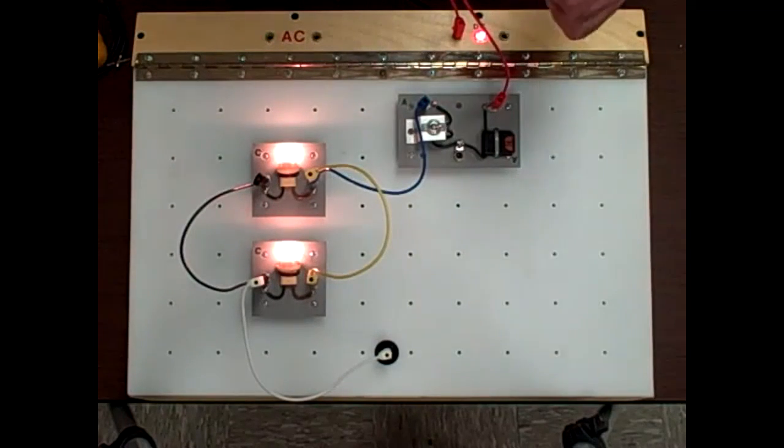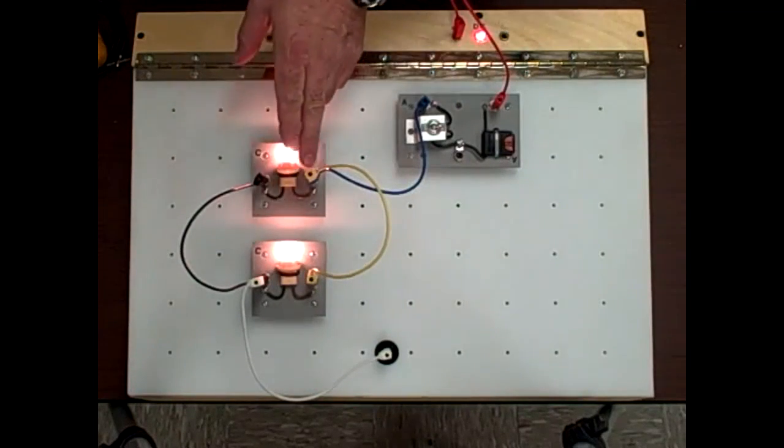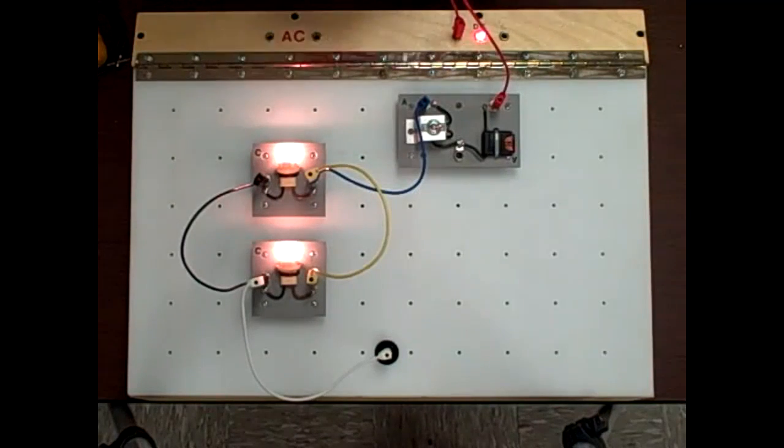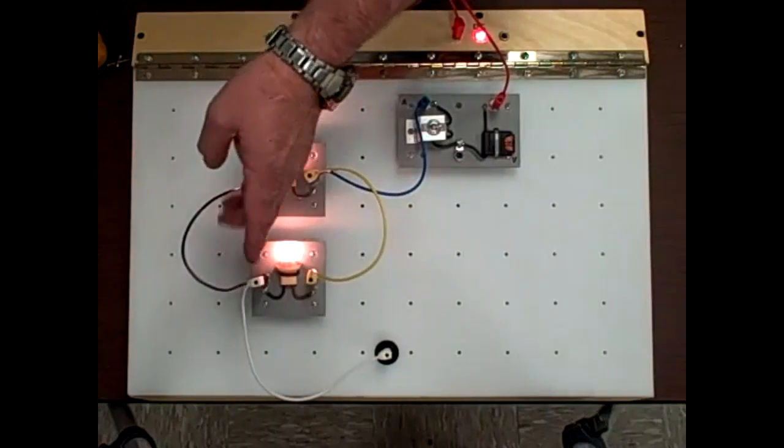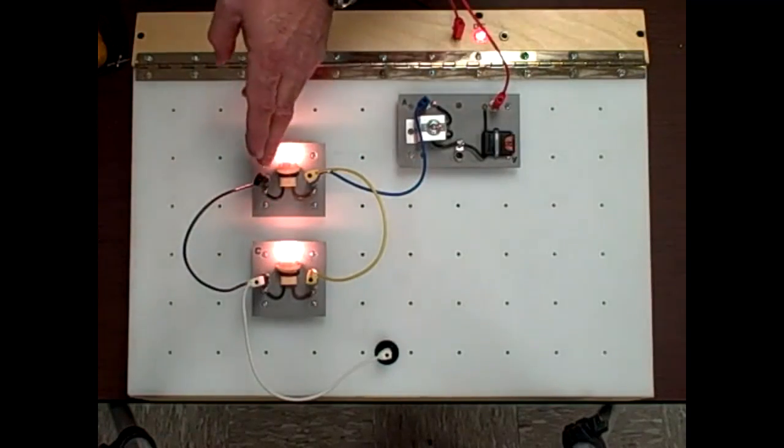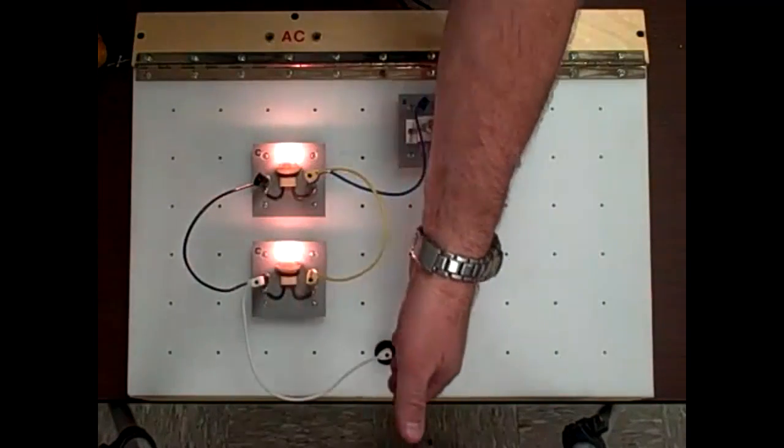That's the main rule of a parallel circuit: all these are called branches. Each one of these is a branch. Each branch is exposed to source voltage. This 13 volts available at power tab is available to both of these branches. This is a branch, that's a branch - two individual circuits.